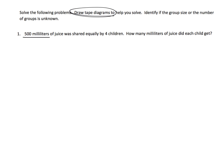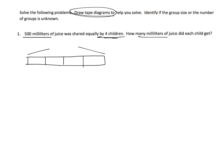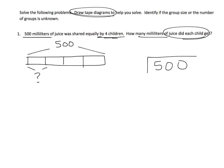Problem 1: 500 milliliters of juice was shared equally by four children. How many milliliters of juice did each child get? This is the partitive technique — we know the whole is 500 milliliters and we know how many groups there are (four children), but we don't know the size of each group. So the division problem is 500 divided by 4, and here's an example of what the tape diagram would look like.